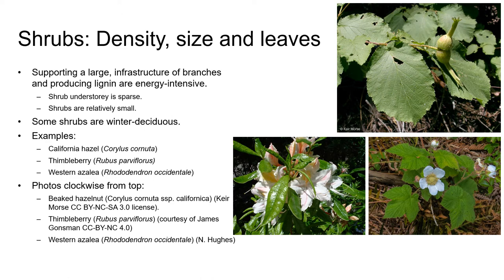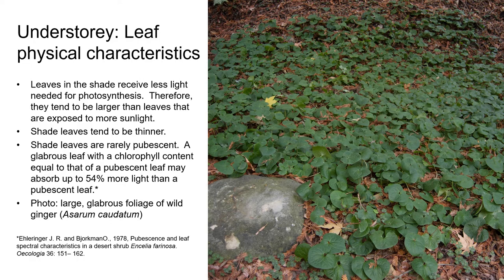Compared to other plant communities where light isn't such a limiting factor to growth, Coast Redwood Forest doesn't have a dense shrub layer. Growing large and producing lignin are energy intensive processes which require light, so rather than putting scarce energy resources into growing big, shrubs tend to stay relatively small and are few in number. Some shrubs also conserve energy by being winter deciduous and losing their leaves during the months when the hours of daylight are particularly low. Examples of winter deciduous shrubs include beaked hazelnut, thimbleberry, and western azalea.